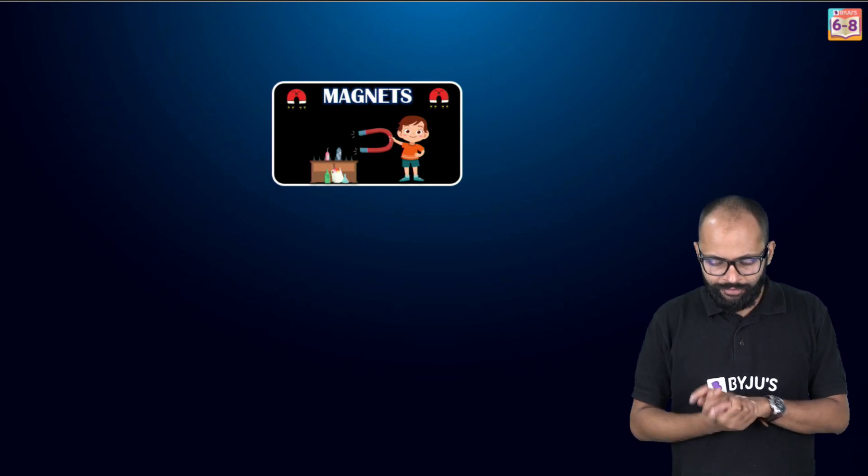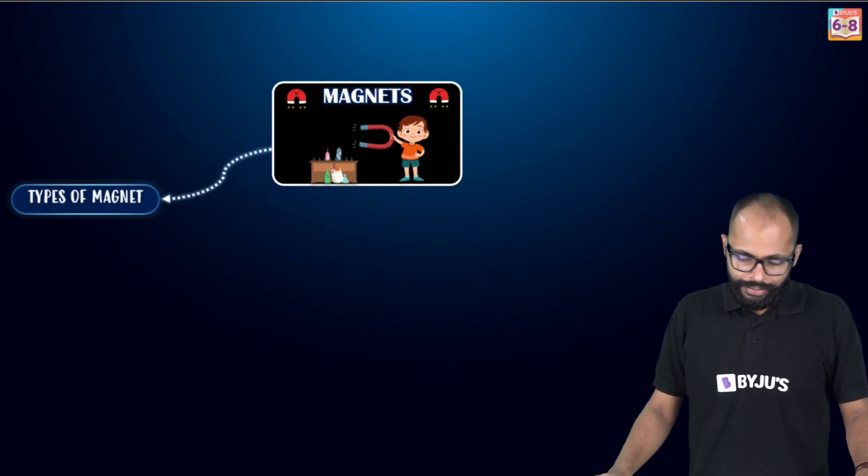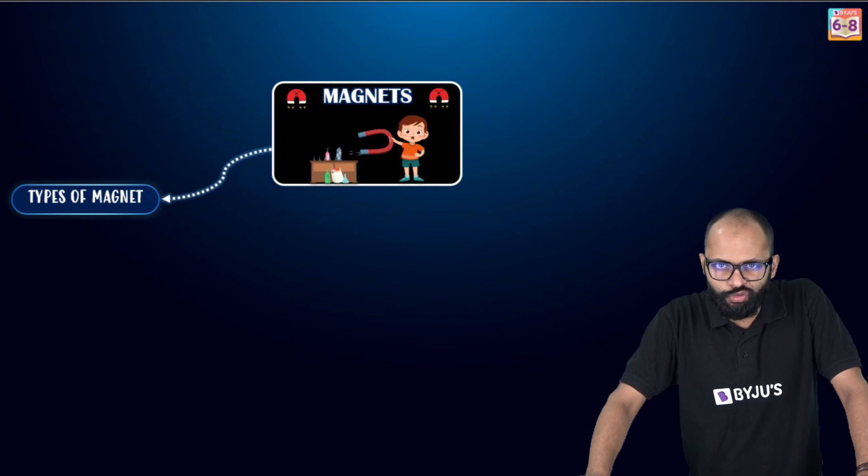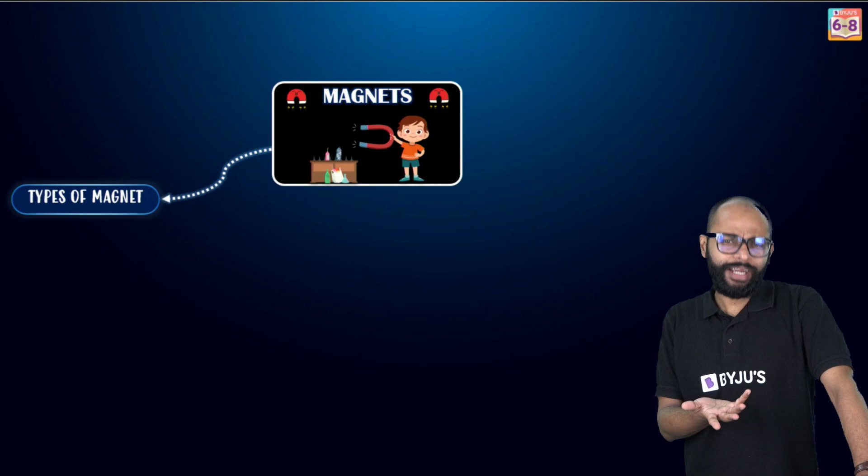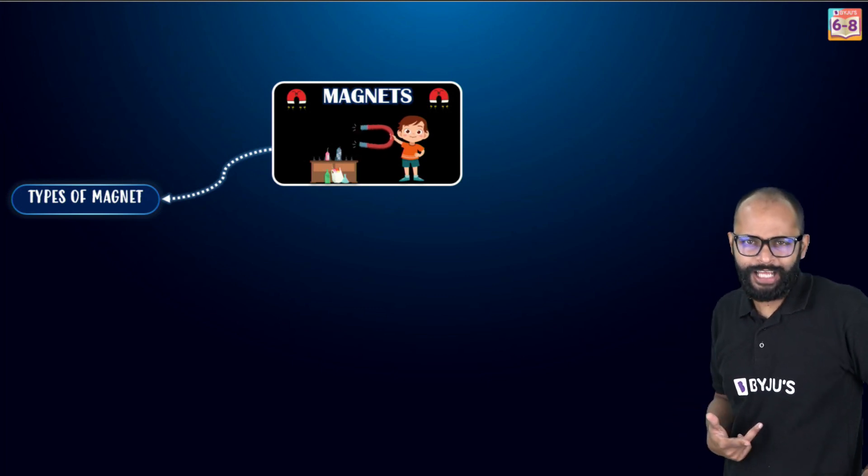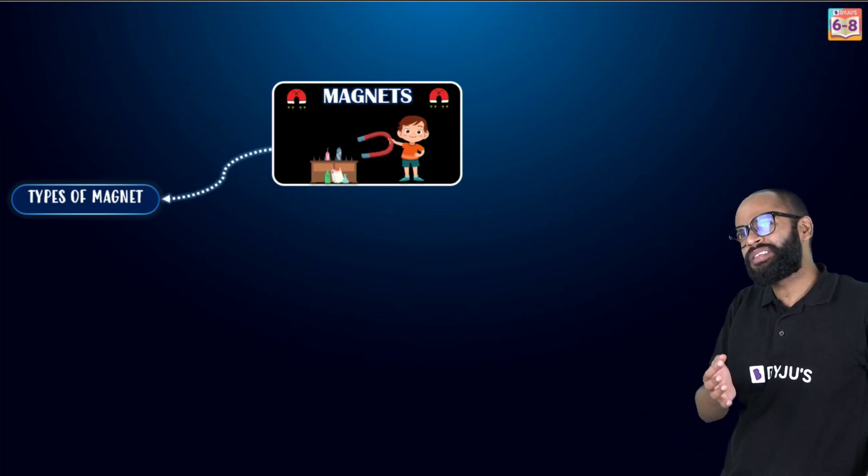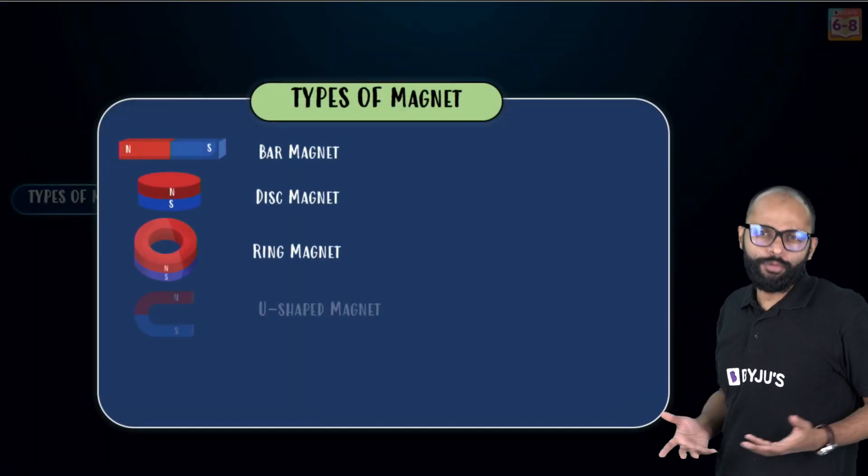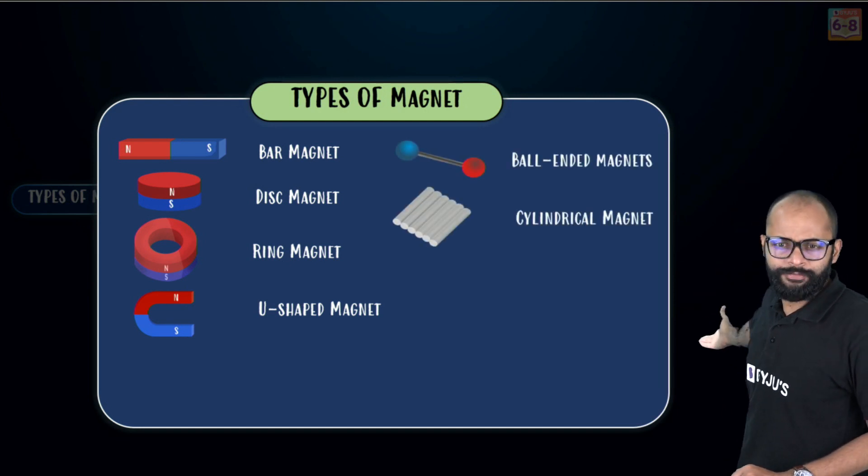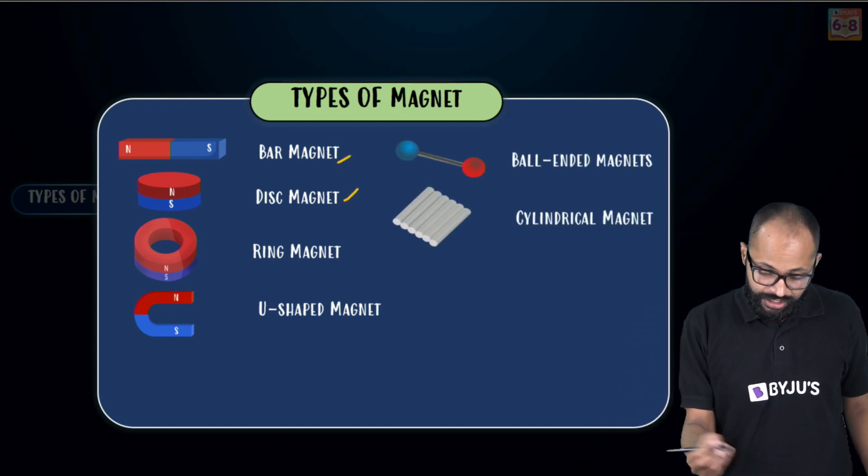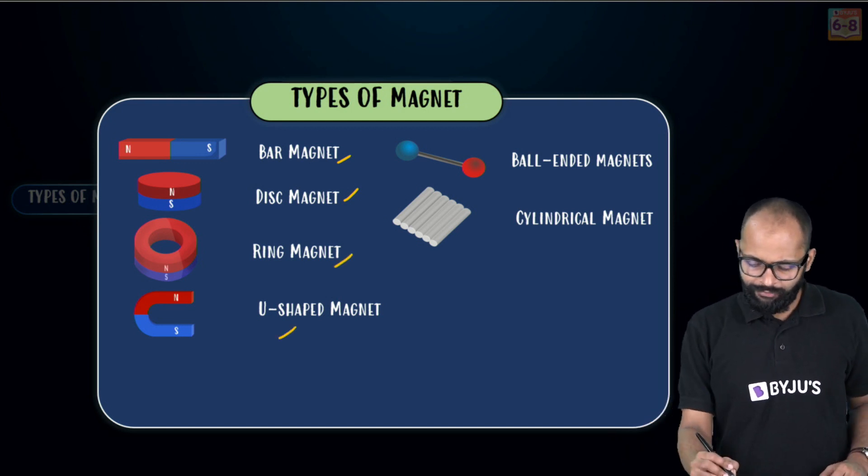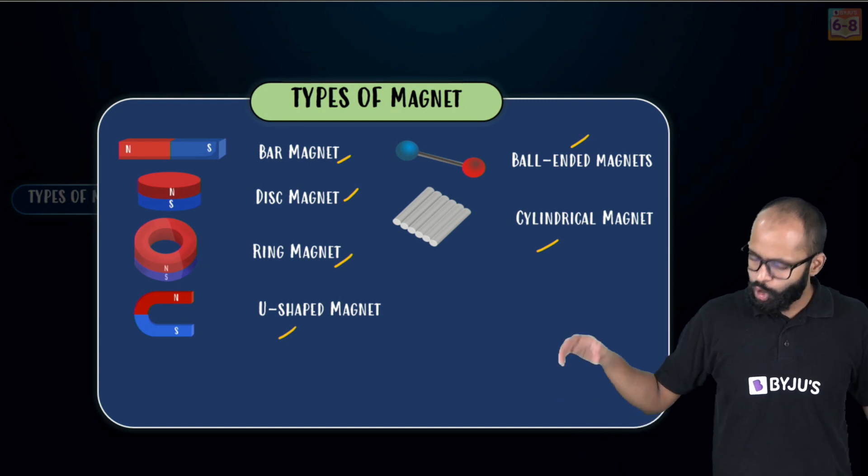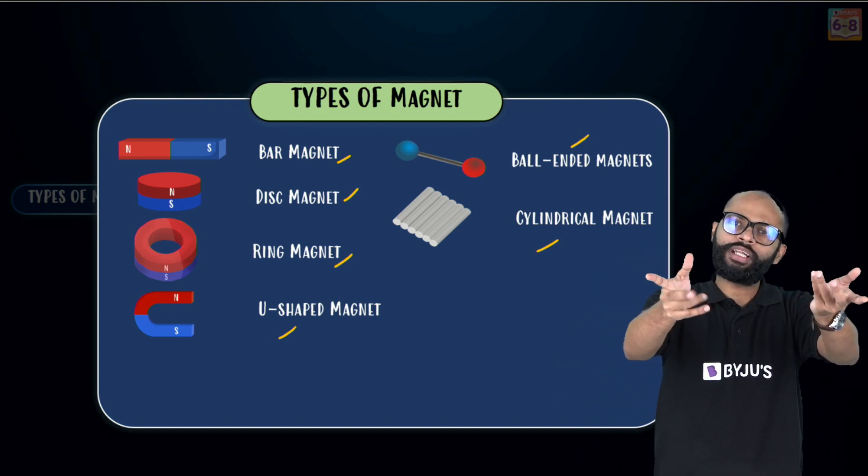So these are two types of magnet: natural and artificial. You should know the examples at least. Now let's learn about types of magnets. I gave you a hint actually. We have a ring shape, U-shape, bar shape. That is the type. I'll just give you more shapes and these are some common shapes we have.